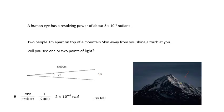What we'll do is we'll work out the angle. You know that the angle in radians is the arc over the radius. So the angle in radians is 1 over 5000, which is 2 × 10⁻⁴. And as that is less than the resolving power, you won't be able to tell between the two points of light.